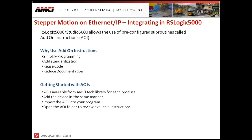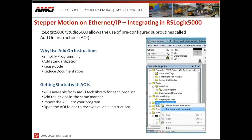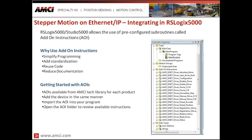All AOIs are available in AMCI's tech library for each product, currently found within sample programs. For example, to find add-on instructions for the SD17060E drive, simply download the sample program for that product from the AMCI website; the zip file contains a folder with all add-on instructions for that product. The add-on instructions are essentially the same whether using an SMD23E or SD17060E. To import them, go to the add-on instruction tab in your logic, click 'Import Add-On Instructions,' and select the folder downloaded with the sample program.